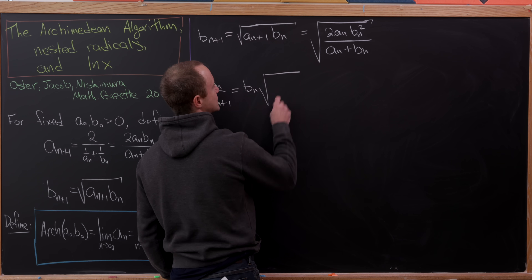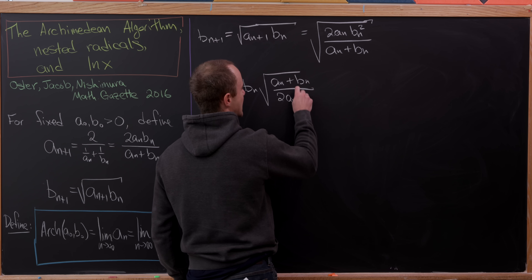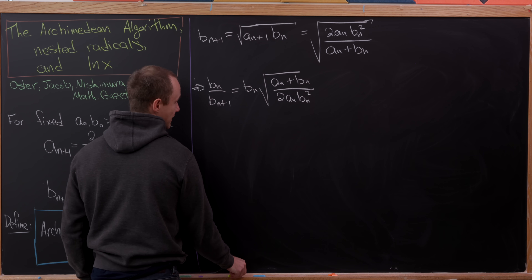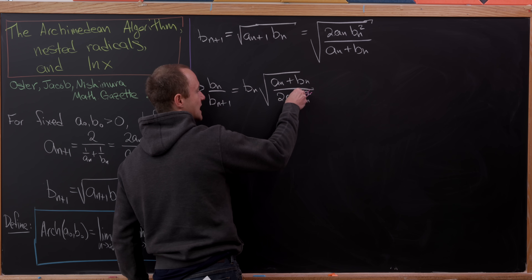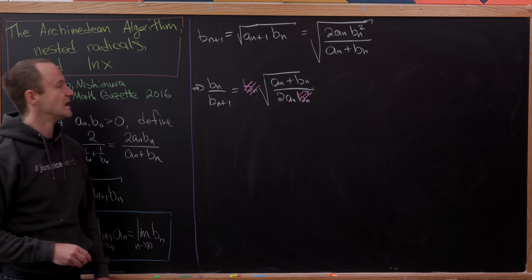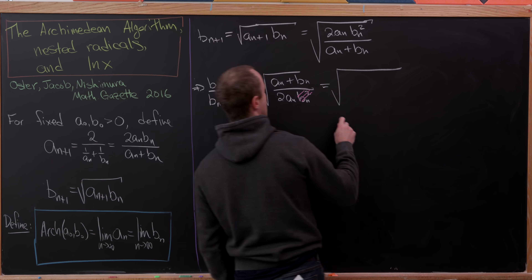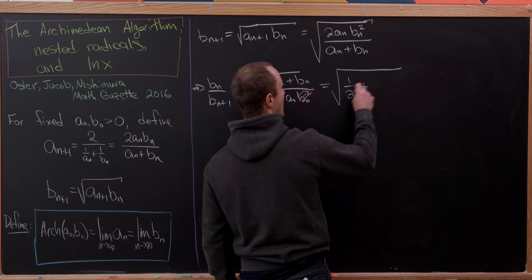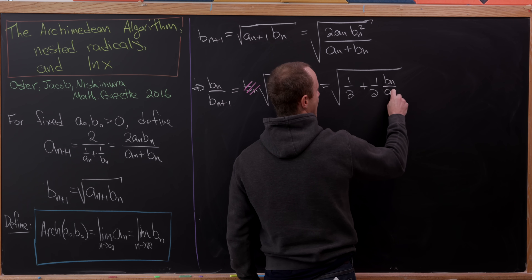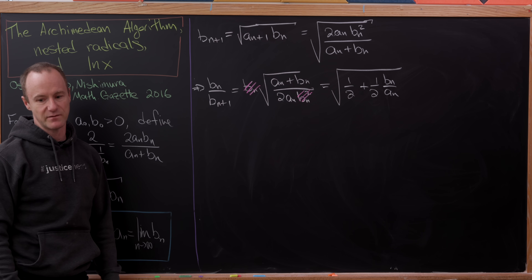We'll have b_n times the square root of (a_n + b_n) over (2·a_n·b_n²). The b_n squared in the denominator cancels with the b_n in the numerator. After splitting up the sum, we get the square root of (1/2 + 1/2 · b_n/a_n). So that gives us a nice way of looking at the quotient of consecutive b_n terms.